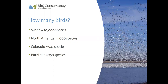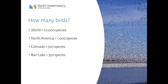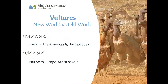Just to give you a general idea of how many birds we are working with: in the world, we have around 10,000 species. In North America, about 1,000 species. In Colorado, 507. And at Barr Lake State Park where we're based, we have 350 species. If you're in the area and it's safe to do so, head out to Barr Lake State Park — they have beautiful nature trails, cool shorebirds coming in right now, and a fabulous nature center.